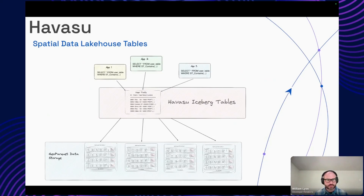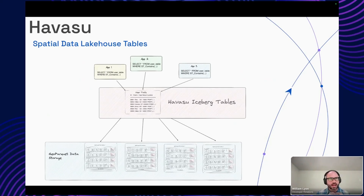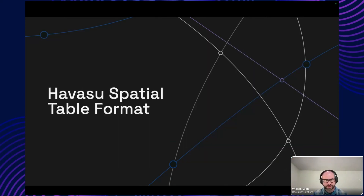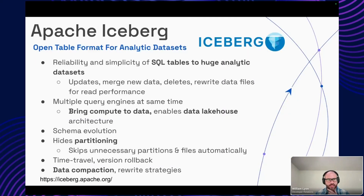This brings us back to Havasu, and the architecture we want to offer: multiple applications querying a single Havasu Iceberg table using spatial SQL at the same time, supporting concurrent operations. Underneath that, we have this data lake of partitioned Parquet or partitioned GeoParquet files. Two interesting things to note here: the GeoParquet aspect, and the Havasu table format itself. Let's dig into Havasu and talk about the features.